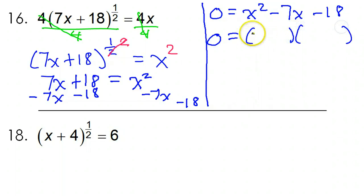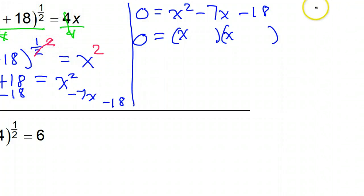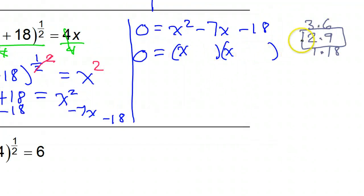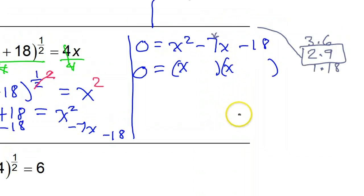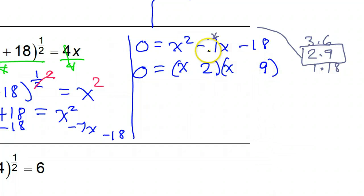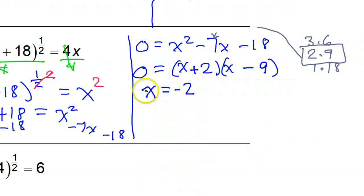Let's try to factor it. x squared is x times x. For 18, I think maybe it's 3 times 6, or 2 times 9, or 1 times 18. I'm really liking 2 times 9 because inner plus outer has to equal the middle — I'm shooting for that negative 7. To get negative 7, I would need a positive 2 and a negative 9. Luckily, that will also multiply to give me negative 18. Setting each factor equal to 0 gives me x equals negative 2 and x equals 9.